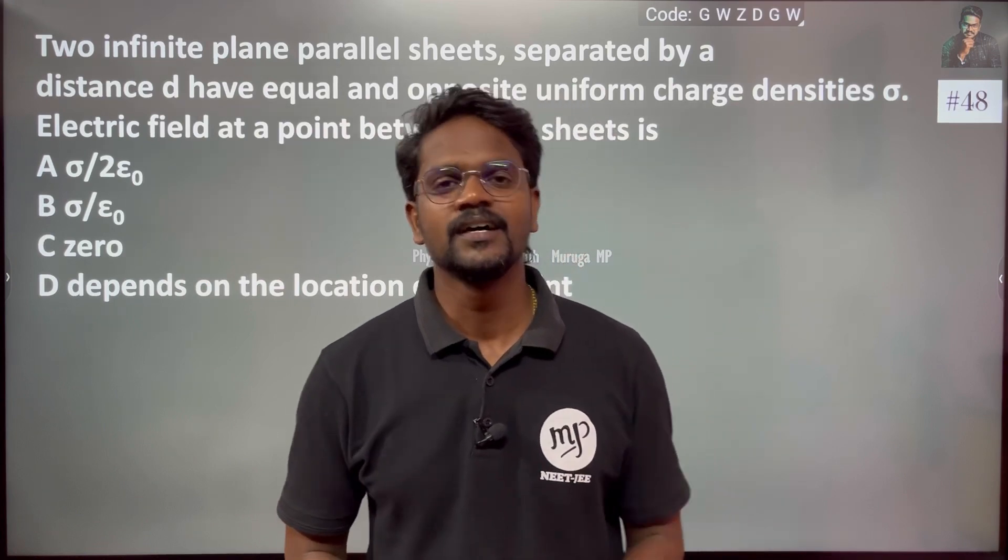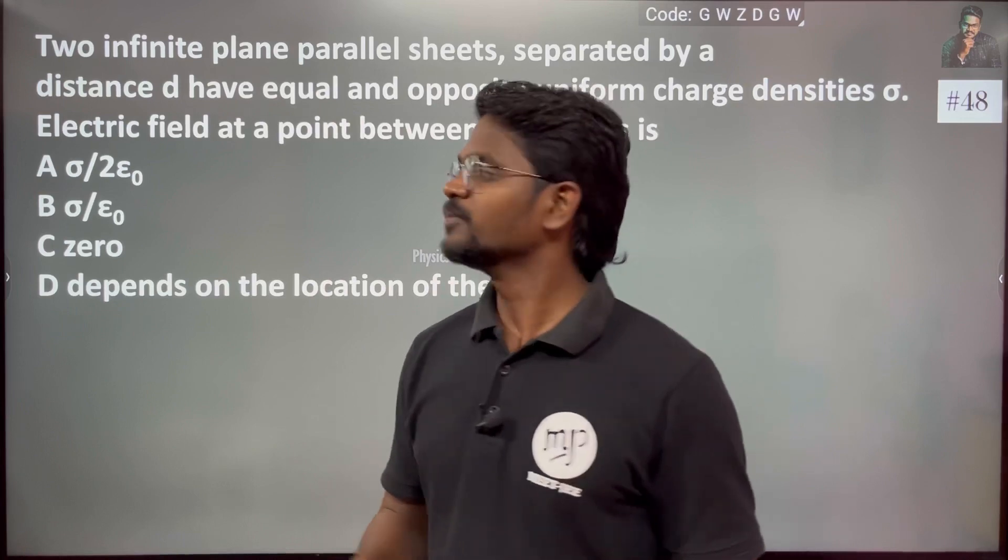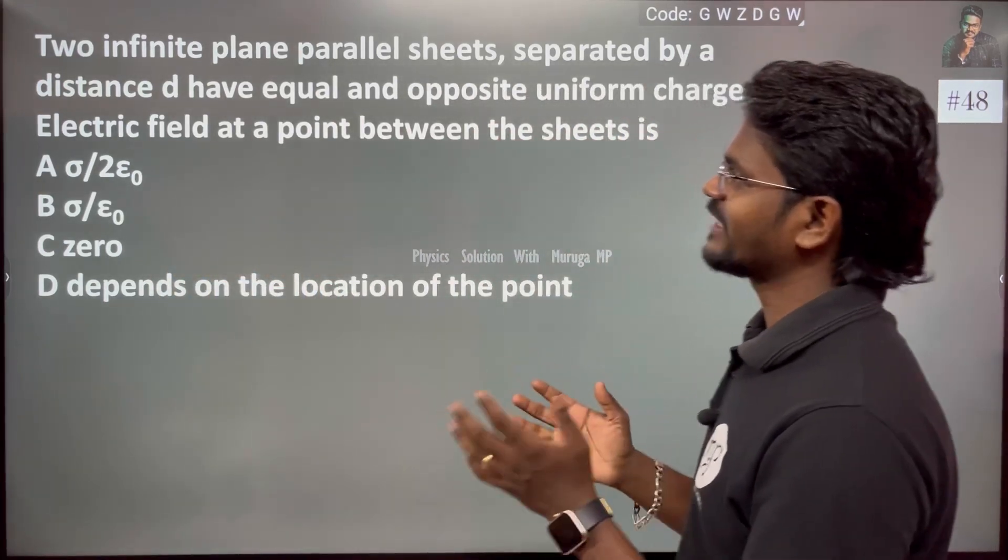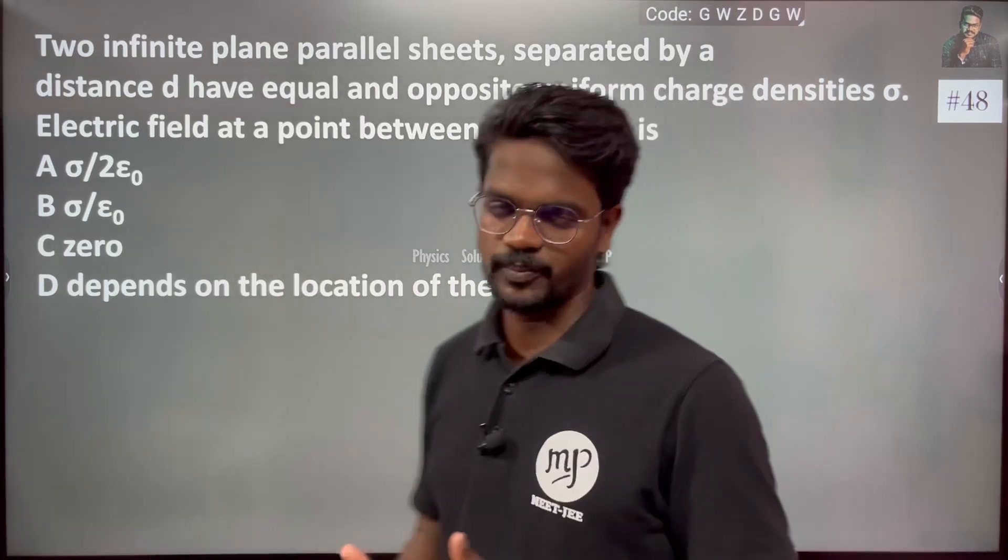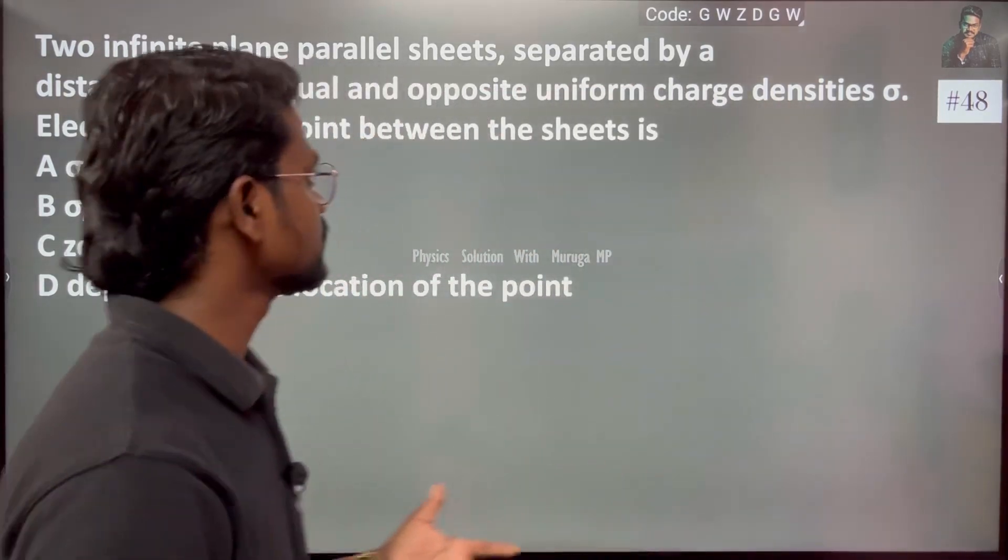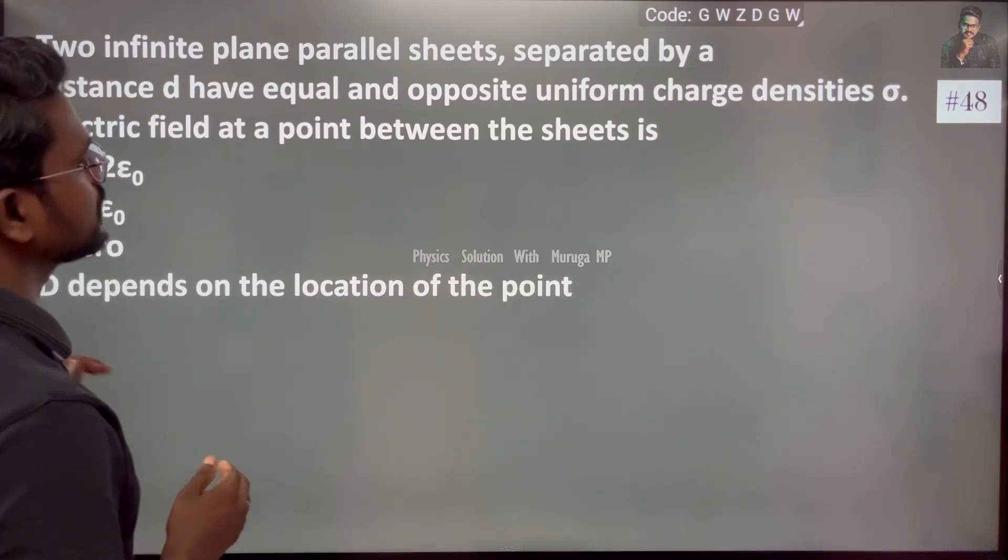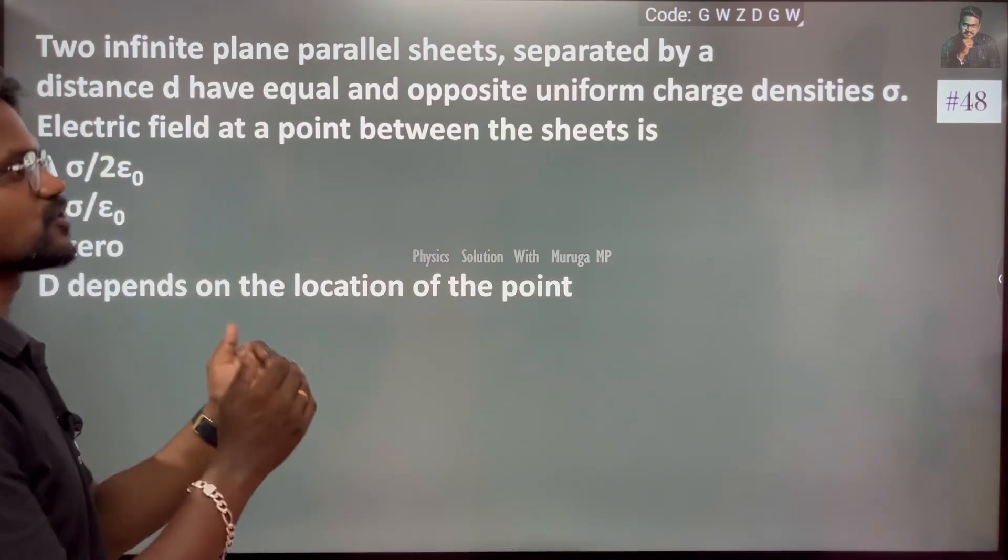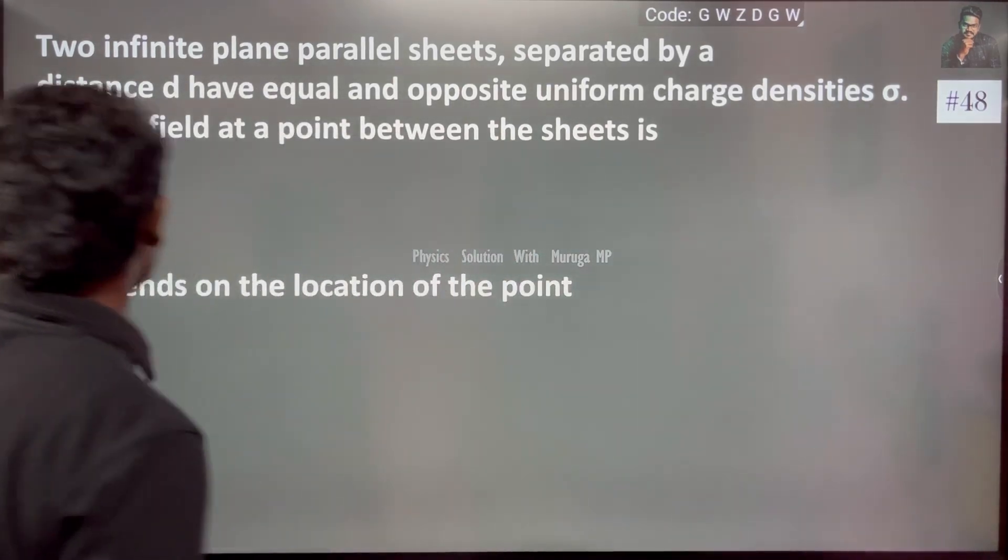Hi everyone, it is a very simple question, number 48. Two infinite plane parallel sheets separated by a distance d have equal and opposite uniform charge density sigma. In that way, Gauss's law applications are going to play a very important role.